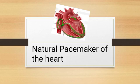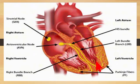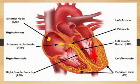In this video we will study about the natural pacemaker of the heart. The heart has its own built-in electrical system called the conduction system. It sends electrical signals throughout the heart, determines the timing of the heartbeat, and causes the heart to beat in a coordinated rhythmic pattern. The conduction system consists of the sinoatrial node, also called the sinus node, the atrioventricular node, the bundle of His, and Purkinje fibers.